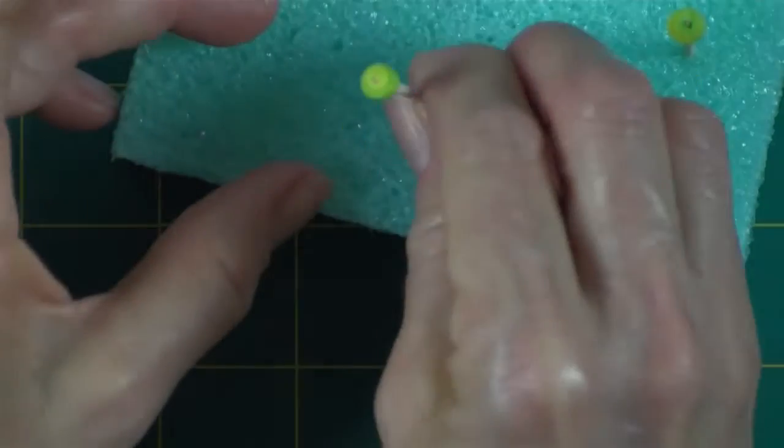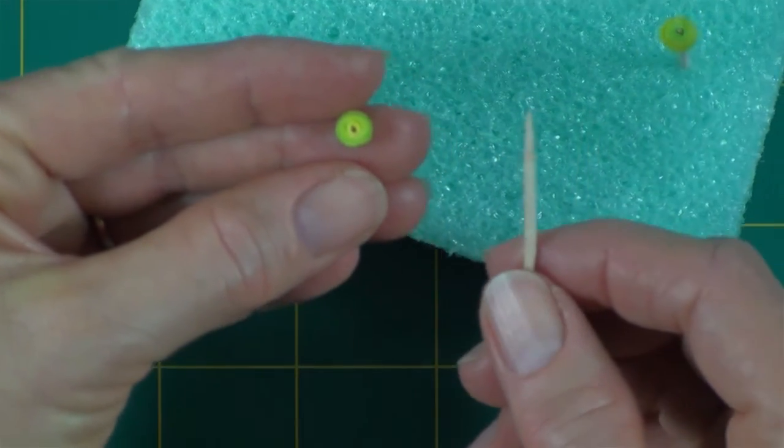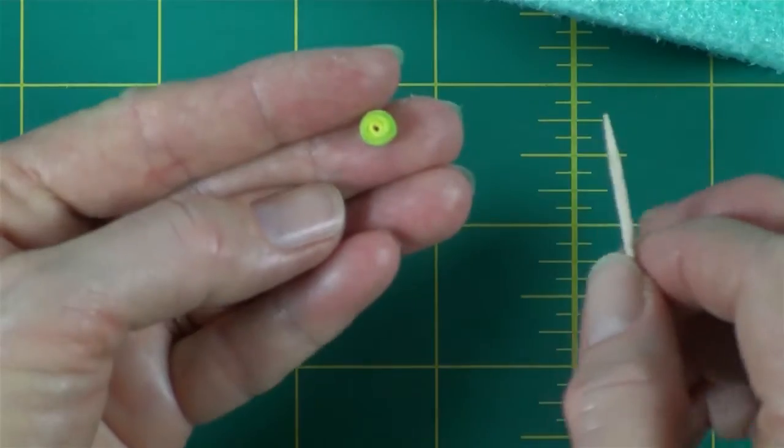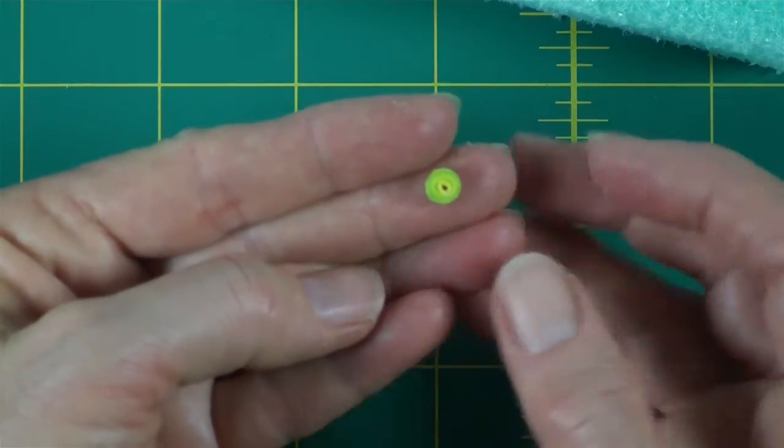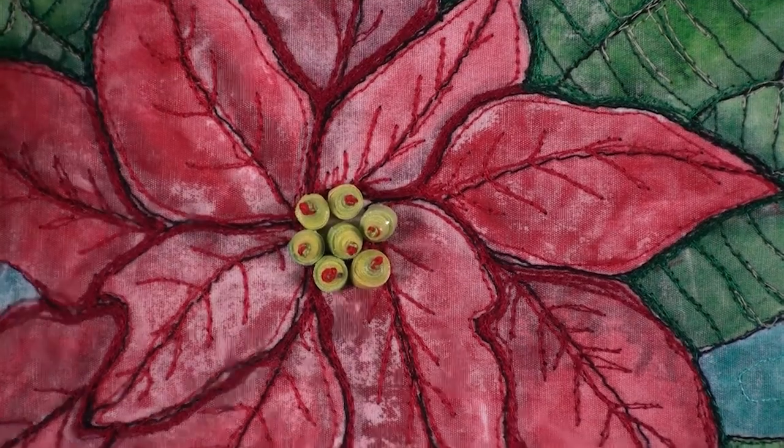Then when the bead is done, I just gently twist it, pop it off of the toothpick, and it's ready to be sewn onto the flower. We'll do that next. This is my finished piece, but I'm going to go ahead and do it on a sample.